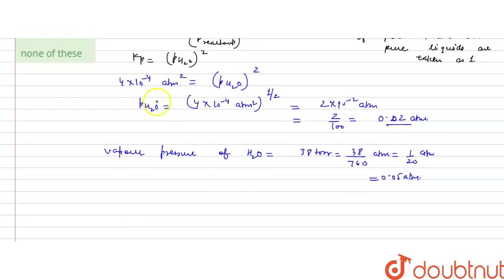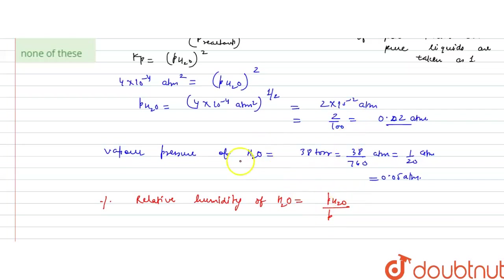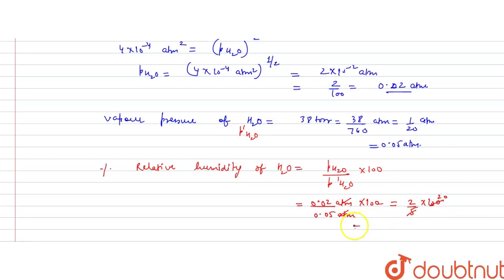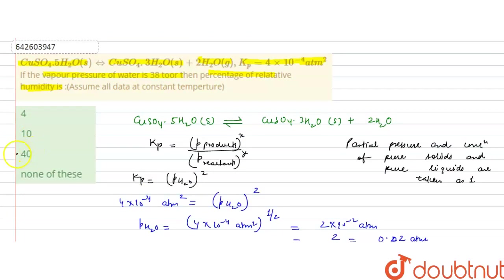The relative humidity is the partial pressure of water in this reaction divided by the vapor pressure of water. So percent relative humidity = (P'water / vapor pressure of water) × 100 = 0.02 atmosphere / 0.05 atmosphere × 100 = 2/5 × 100 = 40%. So relative humidity of water is 40%, and option C is the correct answer.